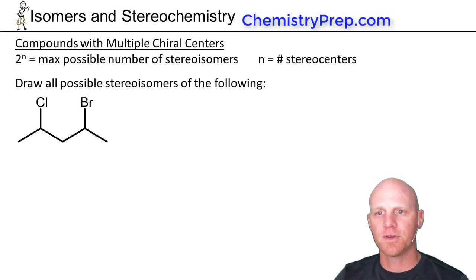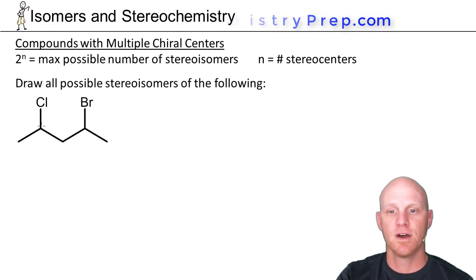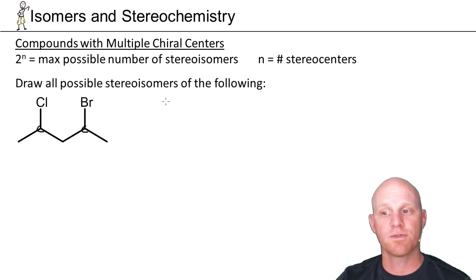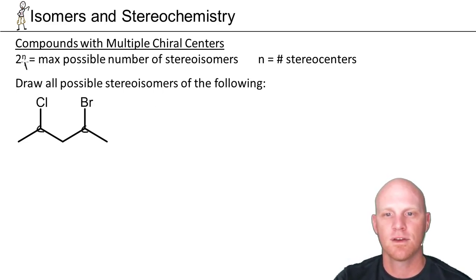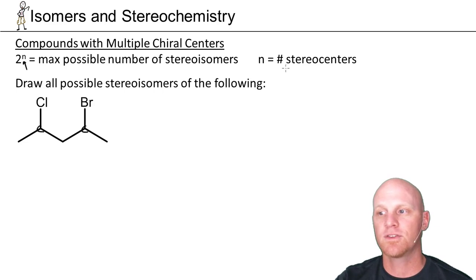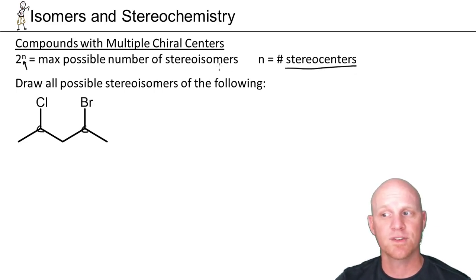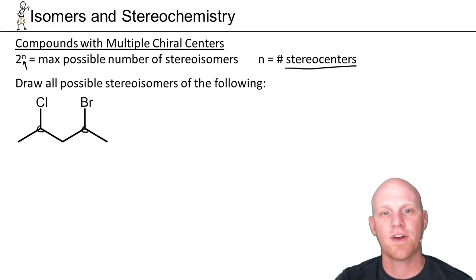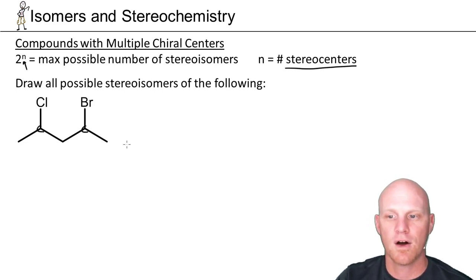We need to talk about a couple of unique things that happen when you have multiple chiral centers. The structure below has two different carbons each bonded to four different things, so two different chiral centers. When that happens, you might have as many as four stereoisomers possible. Here N stands for the number of stereocenters, and a chiral center is the most common example of a stereocenter. In this case, we're going to hit that maximum and draw all four.